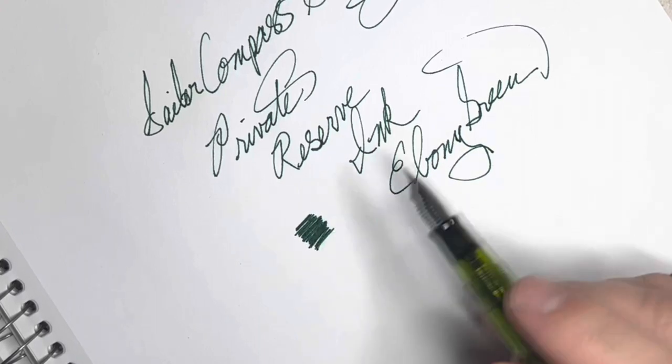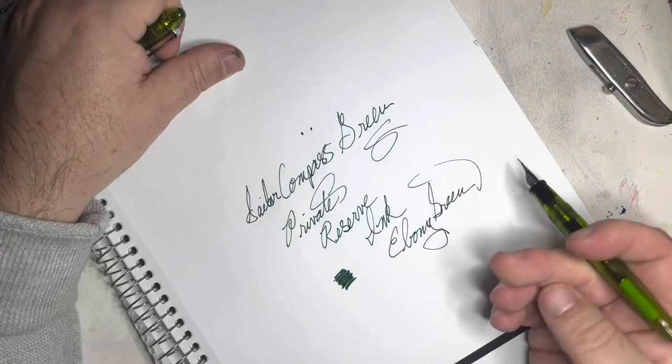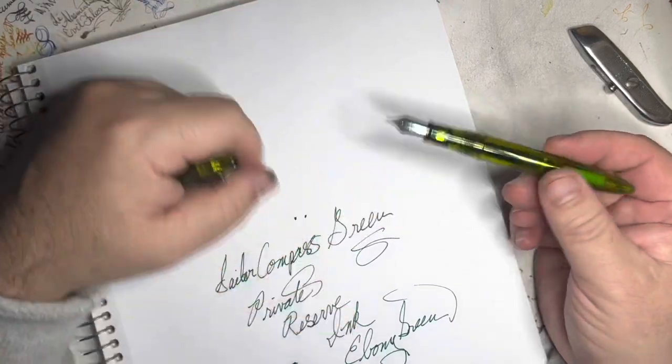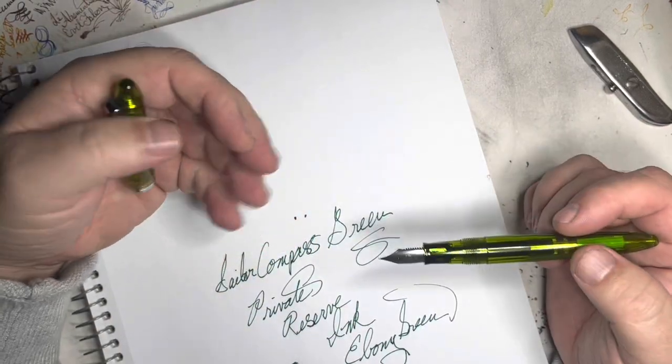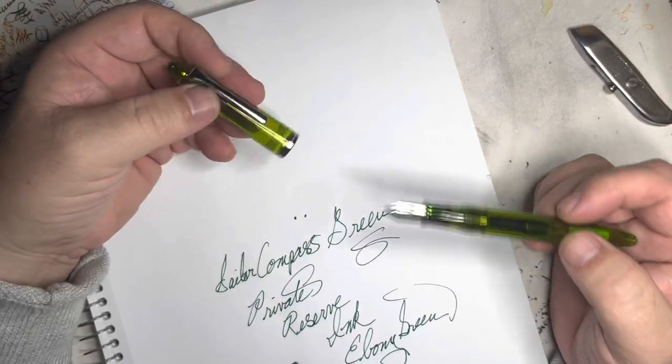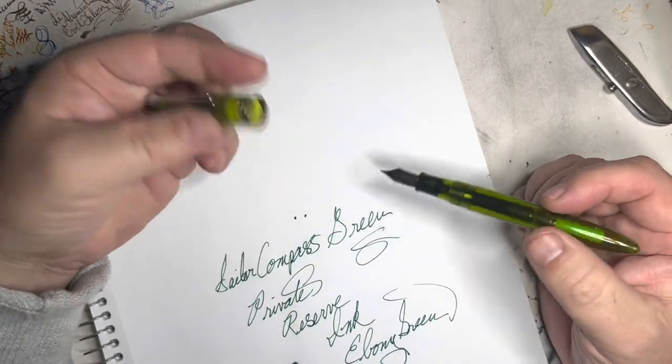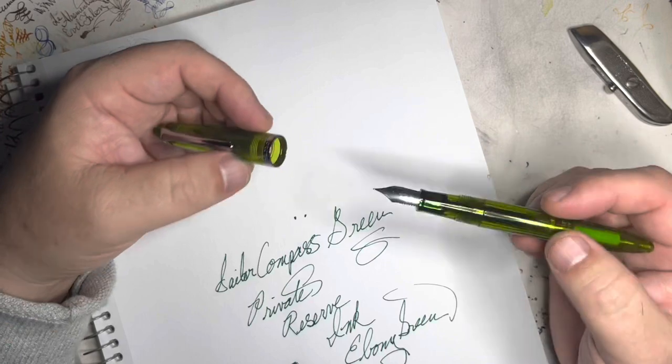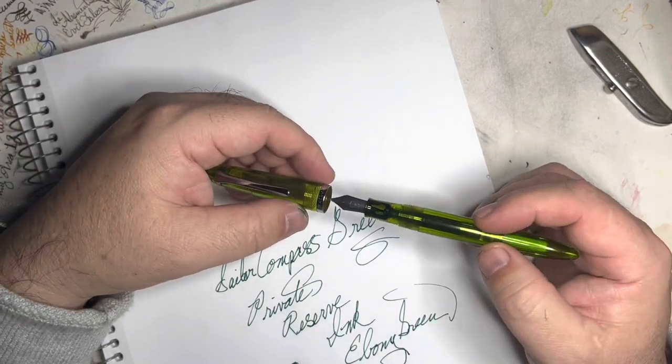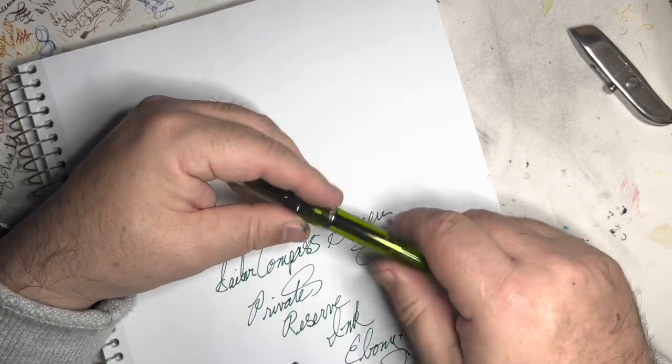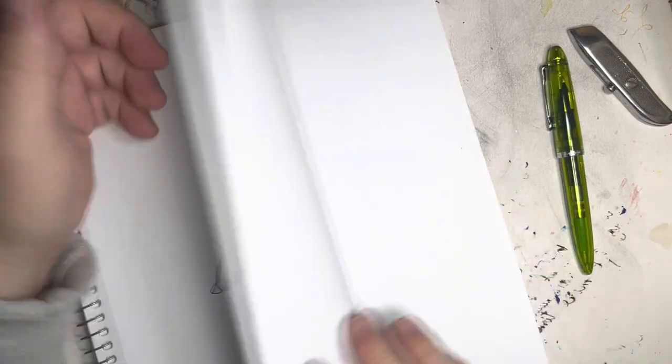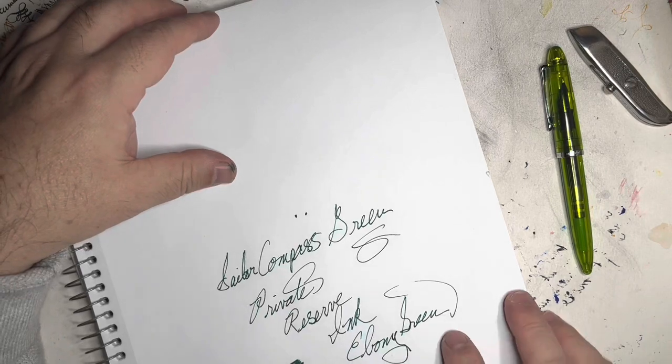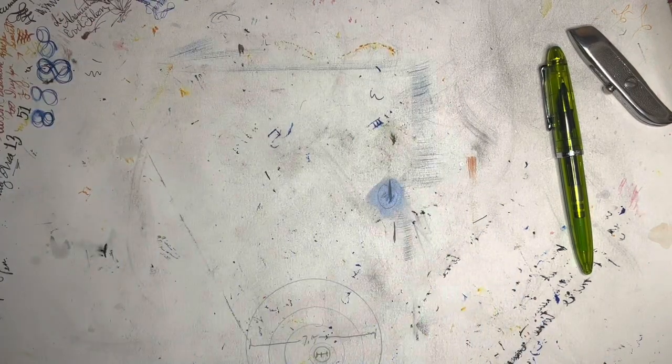Nice and dark. Almost a black. And you can see it dries very, very quickly. These Sailor pens are not the wettest pen. And so, I tend to prefer to use wet inks in them because they don't tend to be all that wet. So, being a dryer pen, this is what I would expect. This kind of performance. And this ink is working exceptionally well on this really crummy paper. Let's try some better paper.